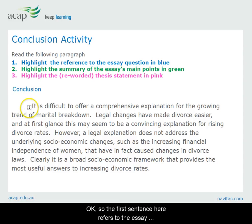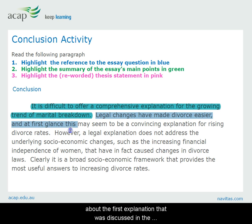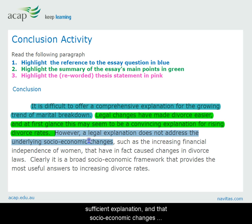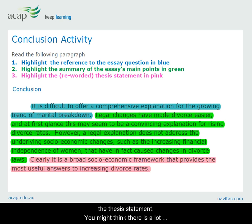The first sentence here refers to the essay question. Then there is a sentence about the first explanation that was discussed in the essay — legal changes. Next, there is a sentence summarising the argument that legal changes are not a sufficient explanation, and that socio-economic changes have caused increased divorce. The final sentence again reiterates the essay answer, or the thesis statement.